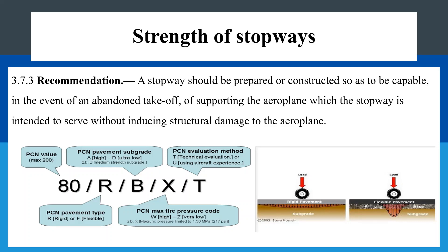Strength of stopways: a stopway should be prepared or constructed so as to be capable, in the event of an abandoned takeoff, of supporting the aeroplane which the stopway is intended to serve without inducing structural damage to the aeroplane. The strength of the stopway should be equivalent to that of the runway. If the stopway is weaker, when an aircraft occasionally stops on it the stopway may give way, leading to secondary damage to the aircraft. It is therefore important to ensure equivalent strength for both the stopway and the runway.